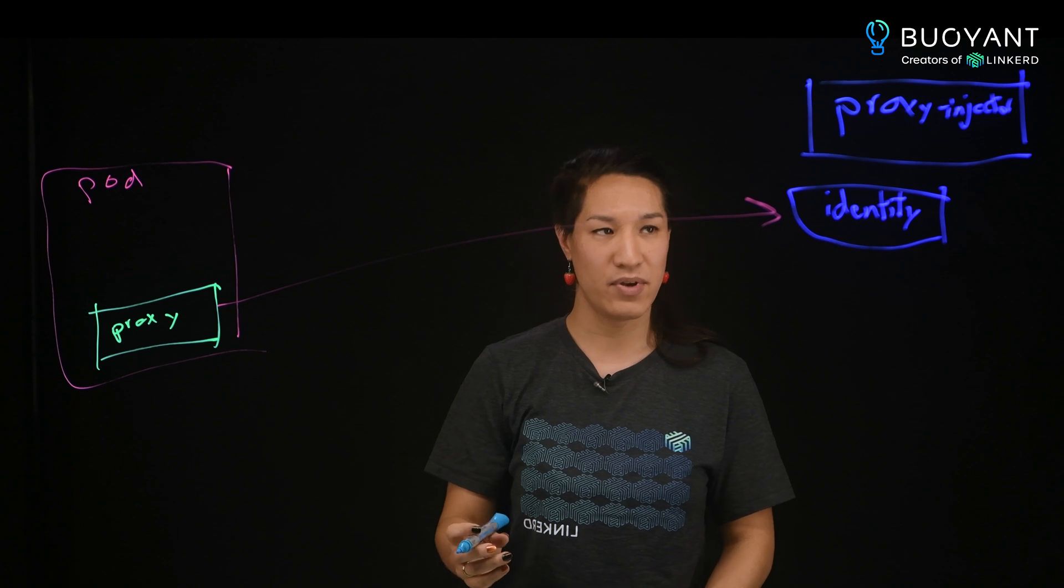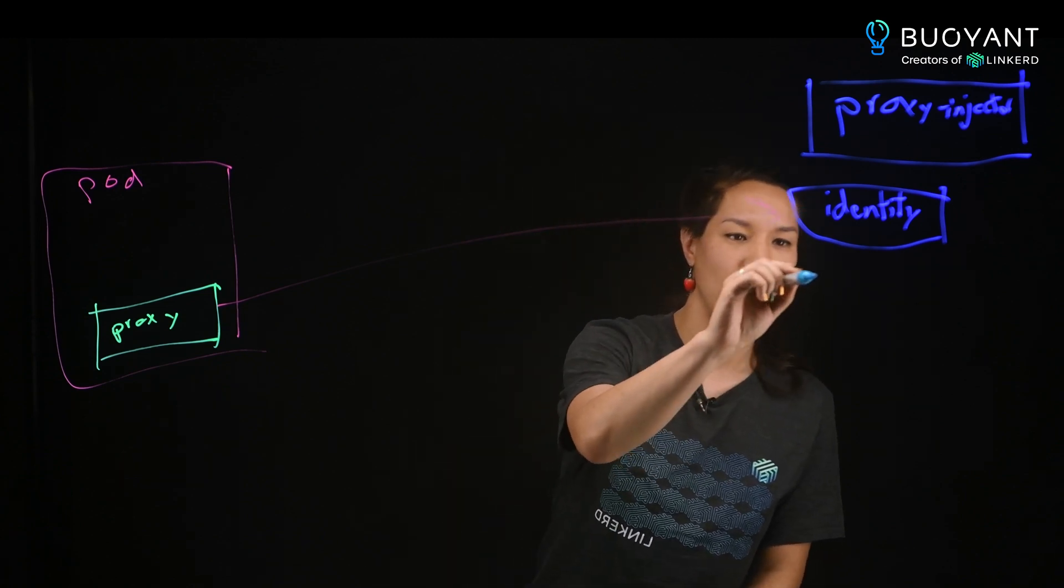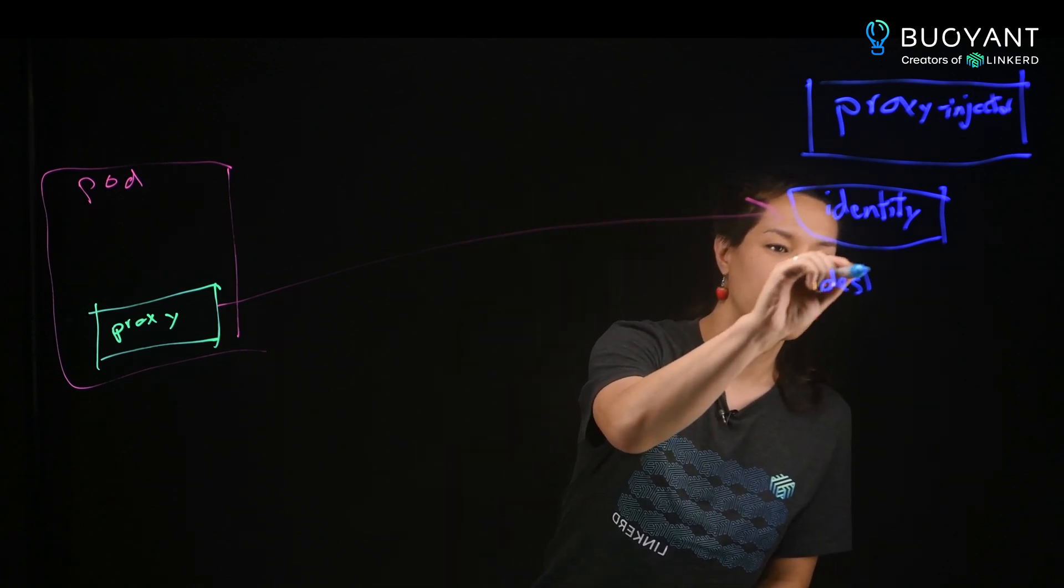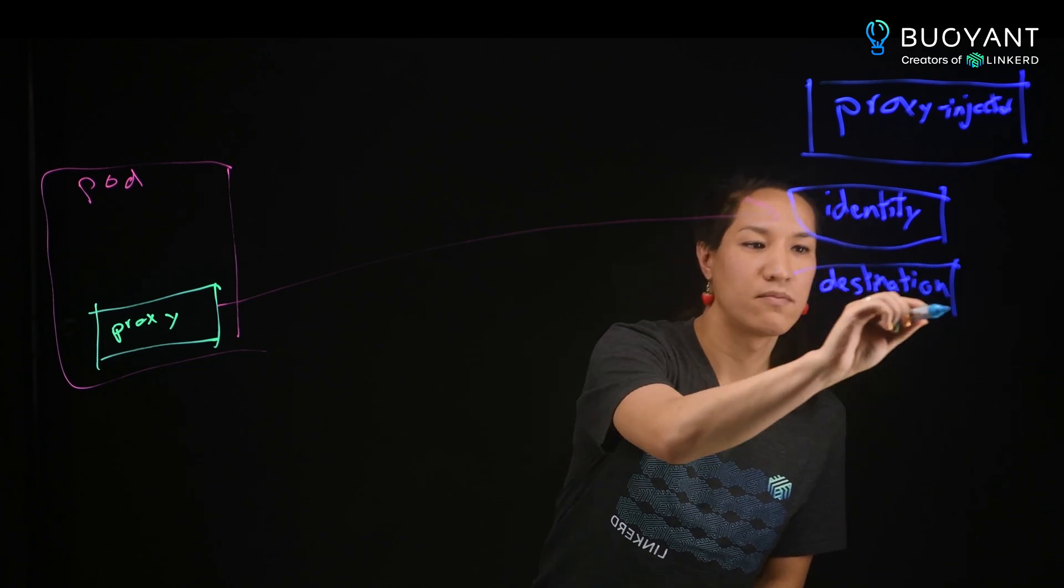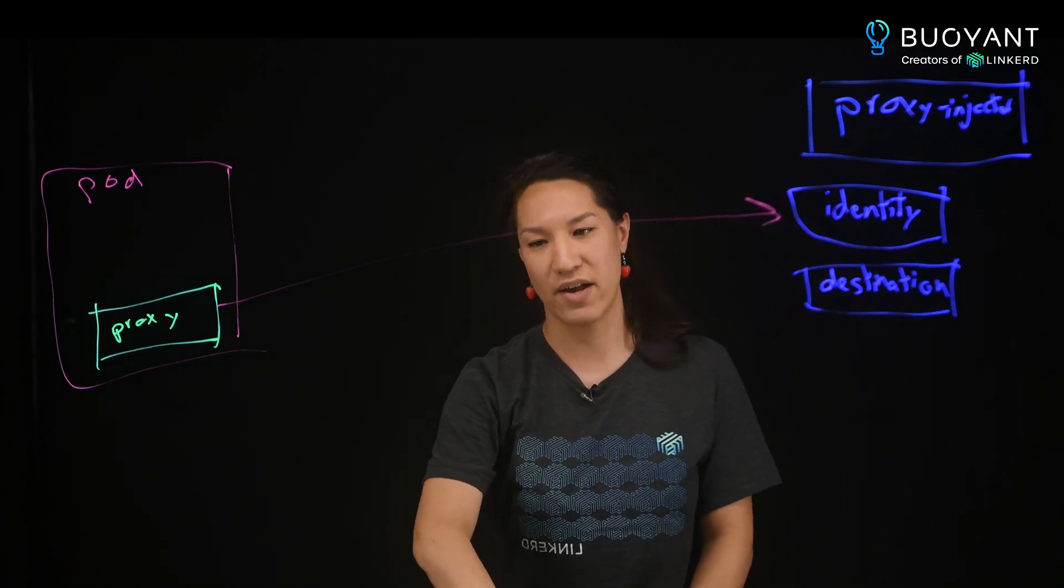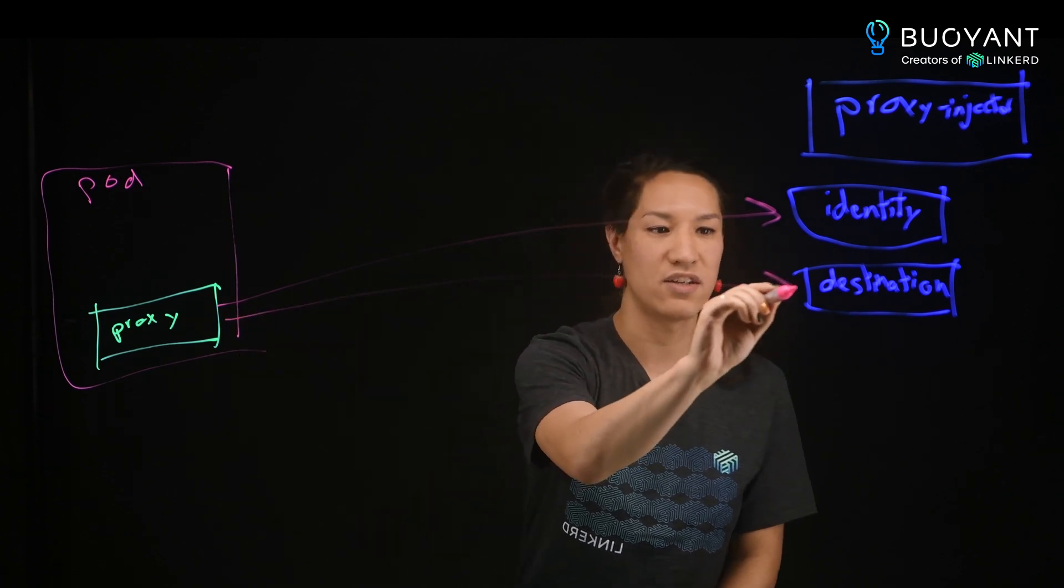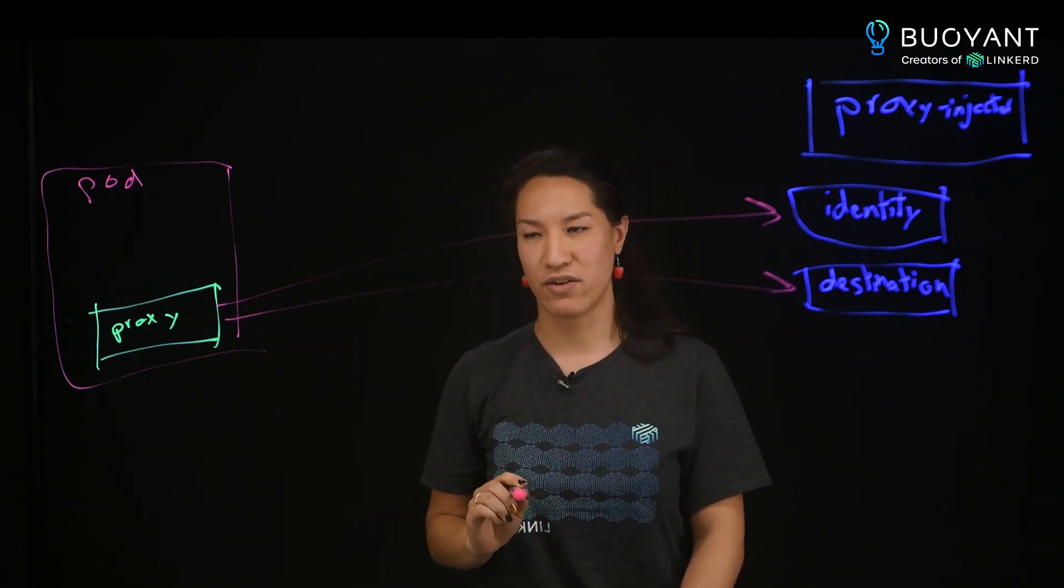So there's two other APIs in the control plane that it uses. One is called destination, and this is a service discovery API that the proxy calls to get a list of endpoints to know where to send those connections to.